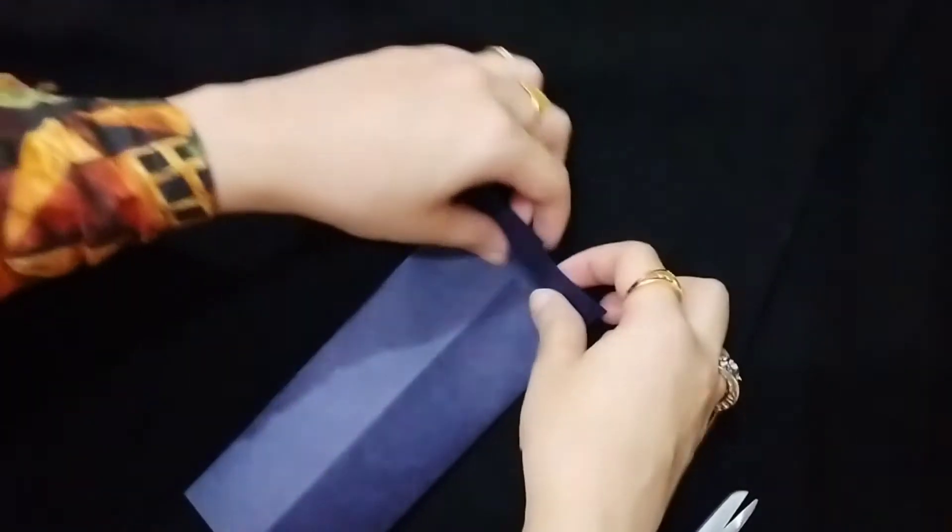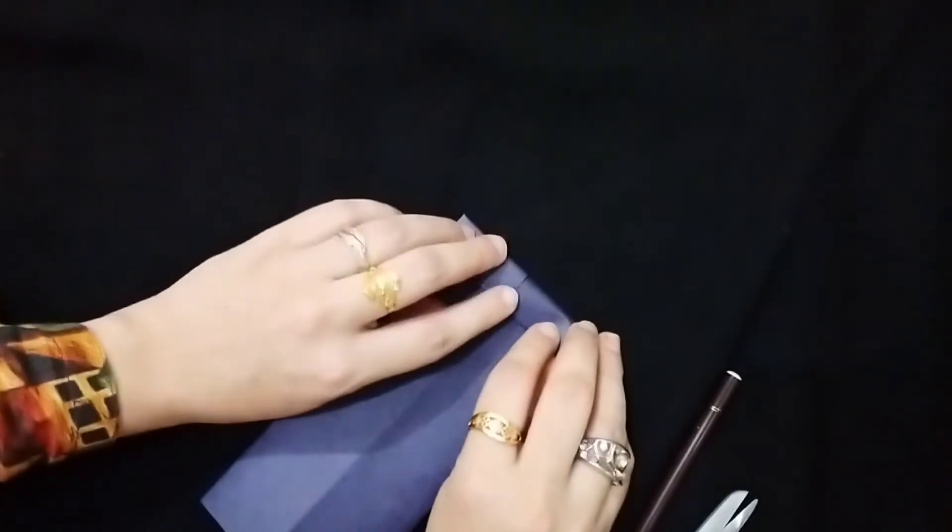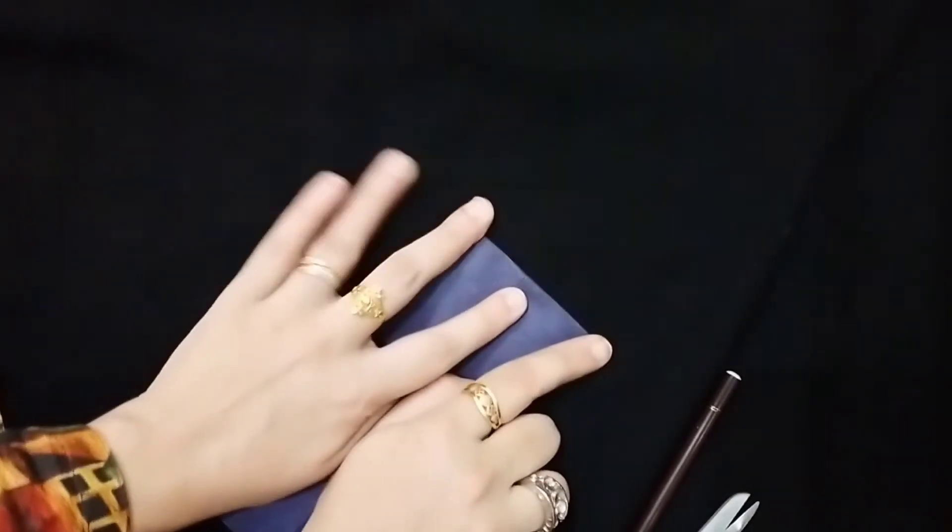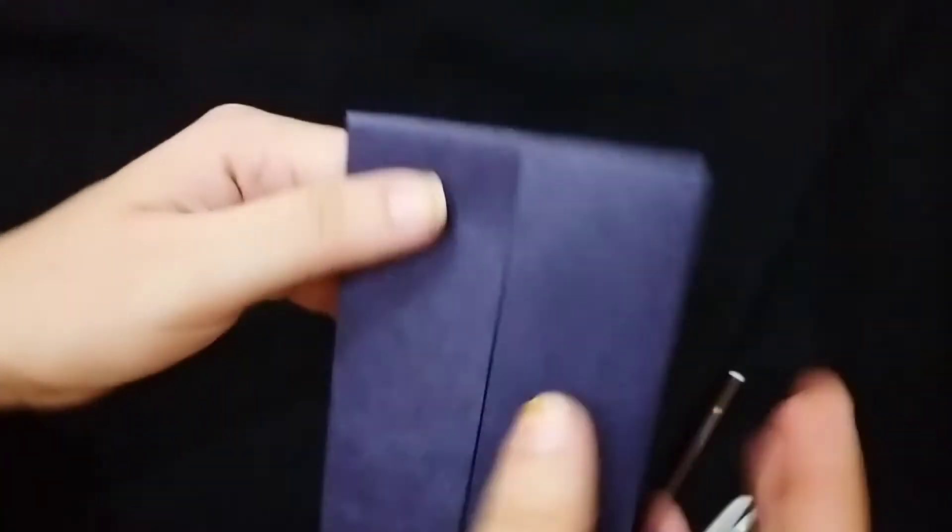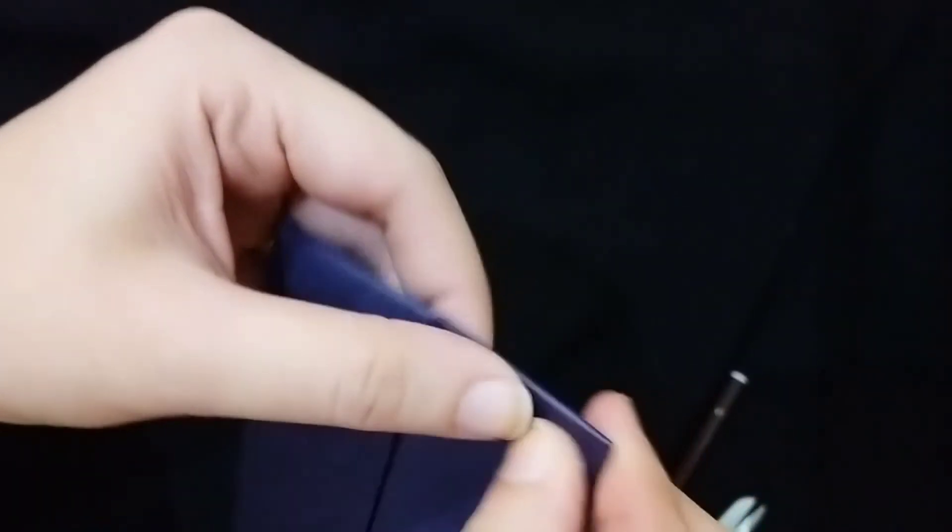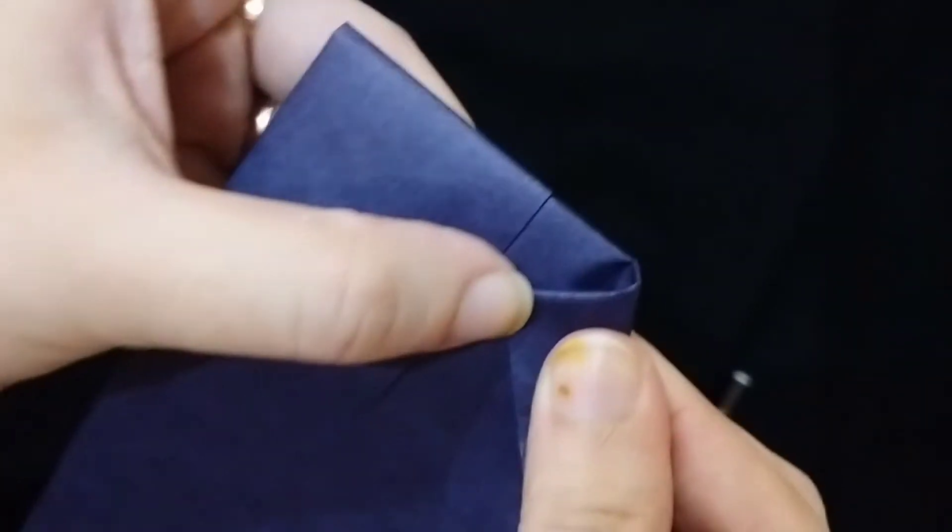Now for the collar, just fold it one centimeter on each side. This is about one centimeter. And we will fold it to the front side in the shape of the collar.